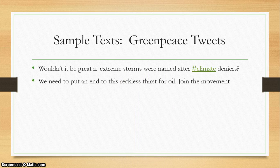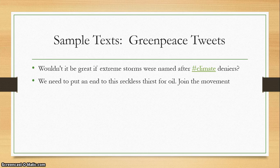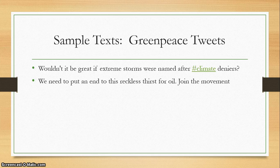We're going to look at a couple of sample tweets, which will line up with your post activity for today. These are both from Greenpeace's account. The first one says: 'Wouldn't it be great if extreme storms were named after climate deniers?' There are a couple of things you could talk about analyzing this tweet. First is the use of a question — they're not making a statement, they're asking a rhetorical question. They do include a hashtag, which is a strategy you can talk about because it's designed to line up that tweet with other tweets about the climate and make it easier for people to find. It also sounds positive but has a kind of negative message — 'wouldn't it be great?' sounds like it should be a good question, but it's actually a really negative question about naming storms after climate deniers. So pay attention to the tone there.